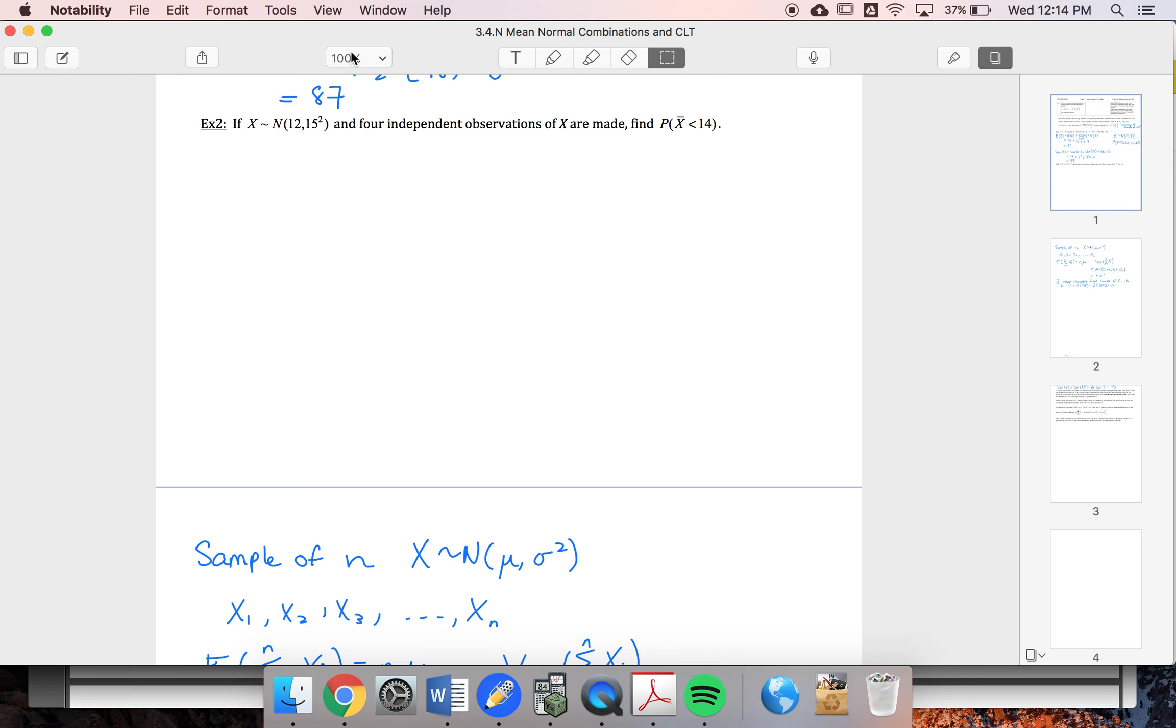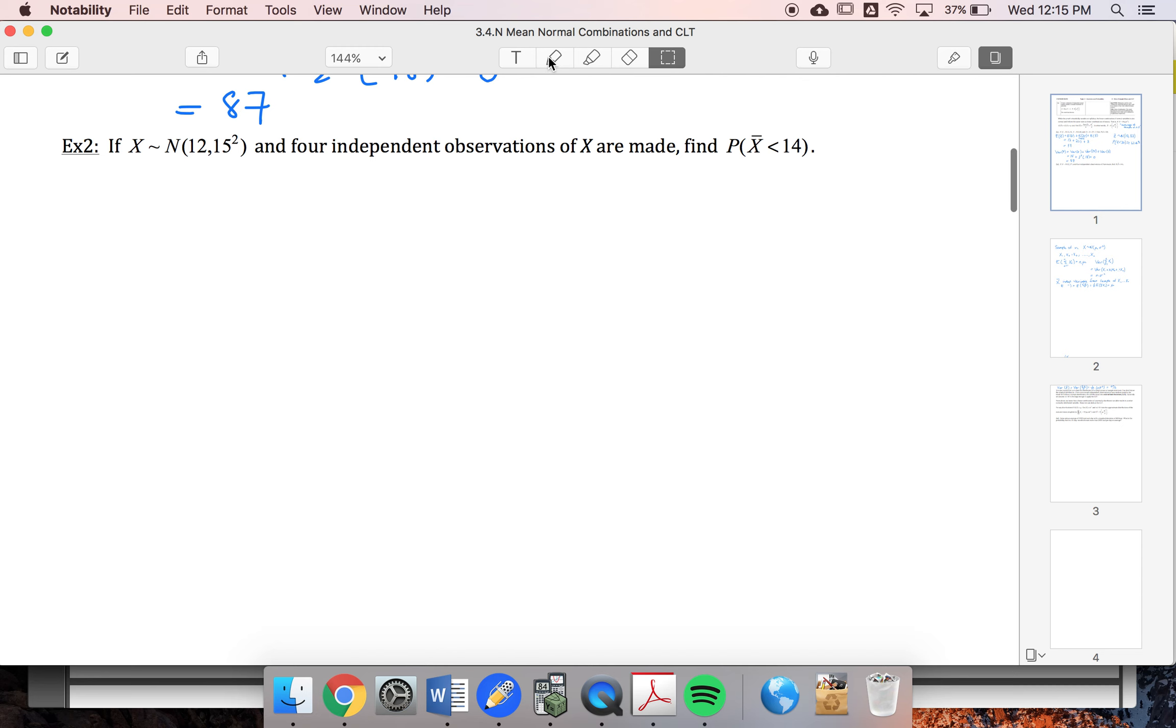All right, so now I can come back and solve this one. So I've got four independent observations of x. So my n is 4. Find probability that x bar is less than 14. Well, E of x bar is going to be equal to my mu, which is 12.